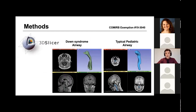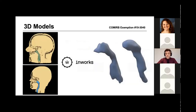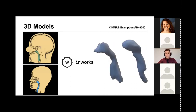This study was deemed exempt by the Colorado Institutional Review Board. Using the open-source program 3D Slicer, I segmented the upper airways of a pediatric patient with Down Syndrome and a pediatric patient without Down Syndrome. I then exported these segmentations as 3D models to demonstrate the anatomic differences between the cases. I subsequently collaborated with InWorks to generate and print physical 3D models of both the Down Syndrome airway and typical pediatric airway. These models are a more tangible way of demonstrating the dysmorphic and characteristic anatomy in children with Down Syndrome that contributes to obstructive sleep apnea.